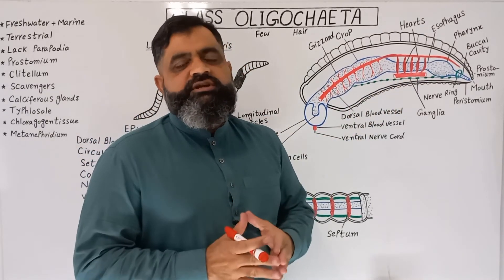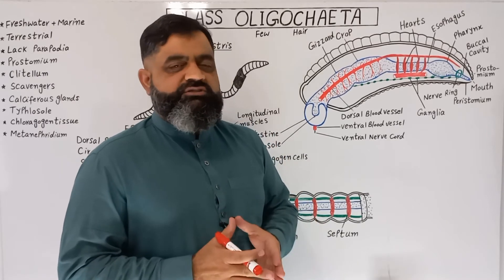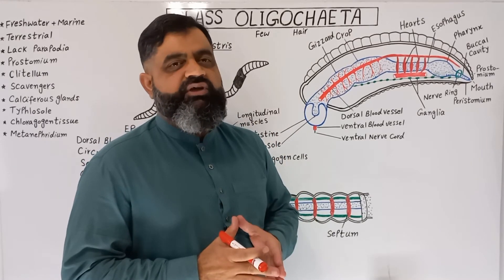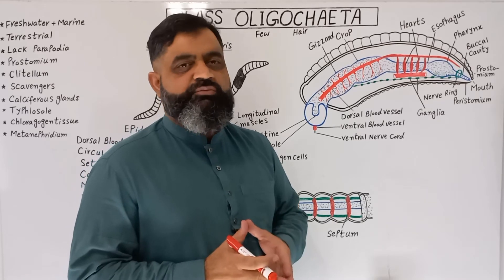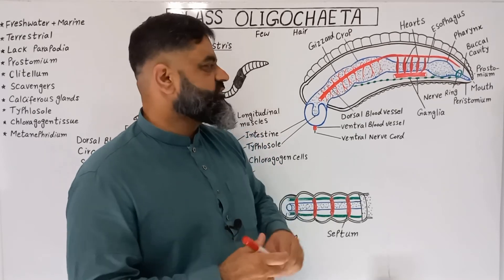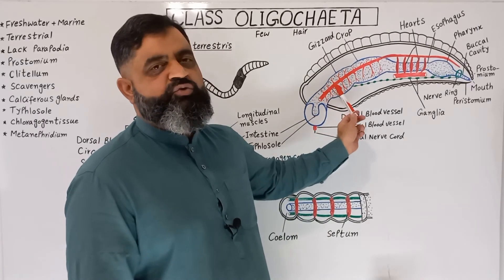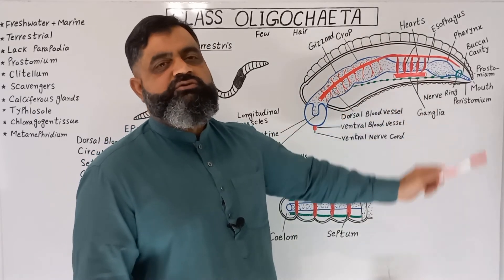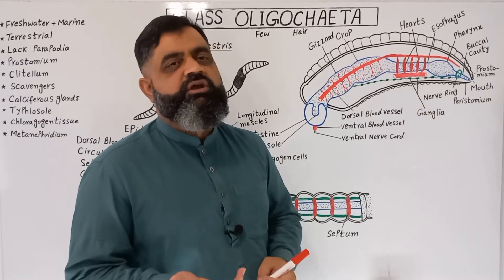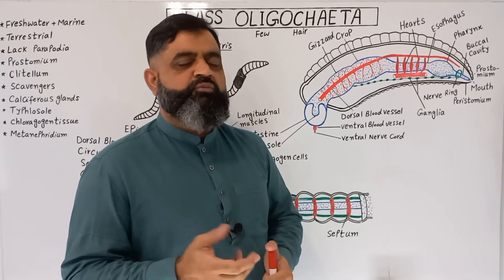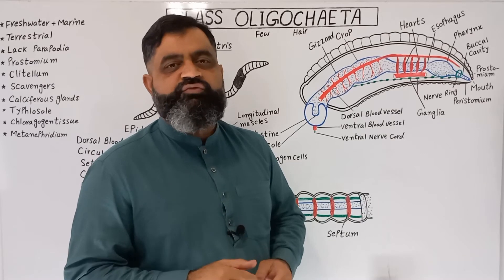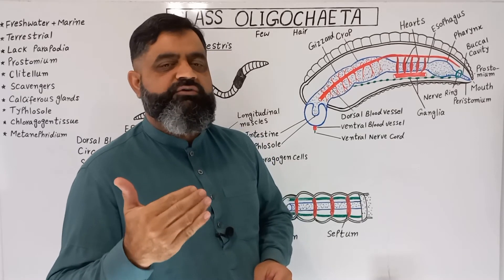Gaseous exchange usually takes place through the skin because the skin is kept moist with the help of glands, which increases the absorption of oxygen from the atmosphere and water. This absorbed oxygen is transported into the blood and carried to different parts of the body. In the same way, CO₂ and ammonia as nitrogenous waste gases can also be removed from the blood through the skin.